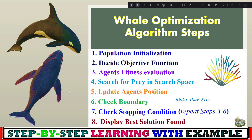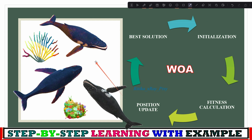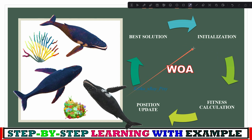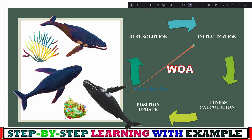These are the basic steps of whale optimization algorithm: first, initialize the population for n agents in the search space; next, calculate the fitness value for all agents; then update their positions; and finally display the best solution found.